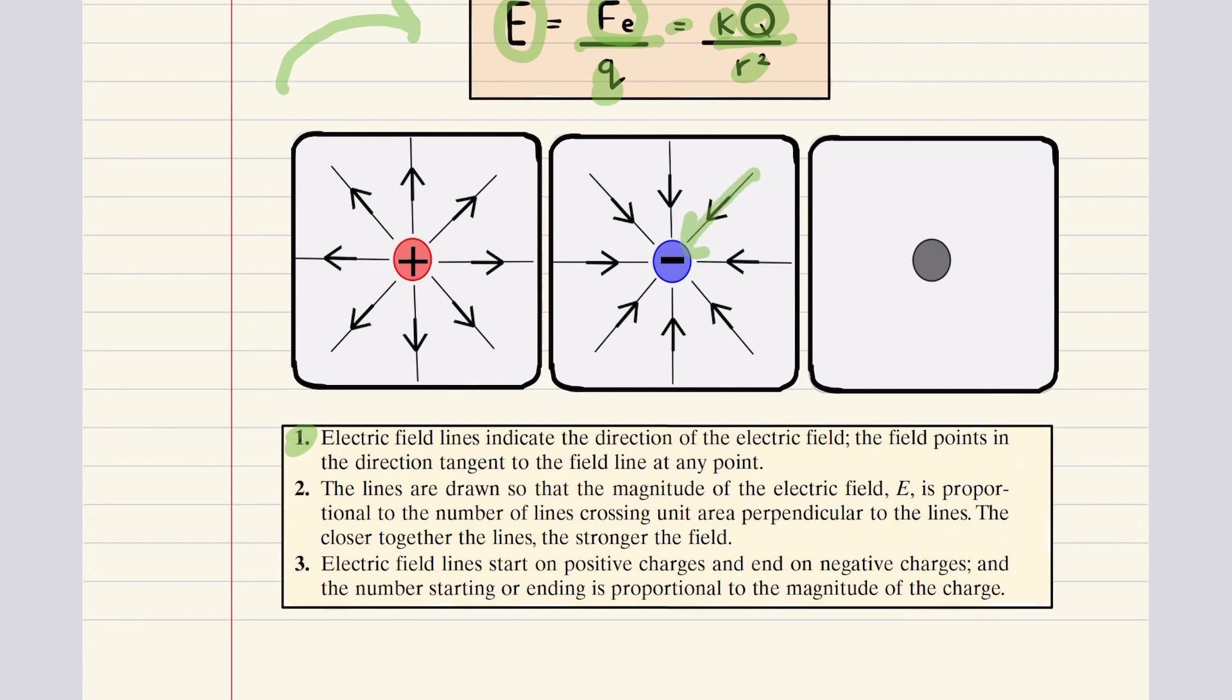Point two, the number of lines indicate the strength of the field. The closer the lines are to each other, the stronger the field in that region. And our final point is that electric field lines always start from the positive charge and they end on the negative charge. And again, the number of lines starting or ending at a charge is proportional to the magnitude of that charge.